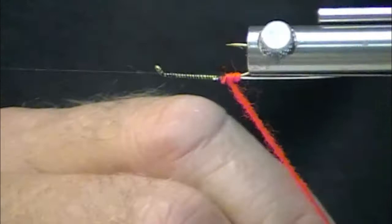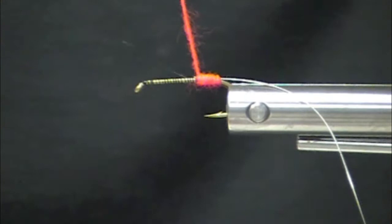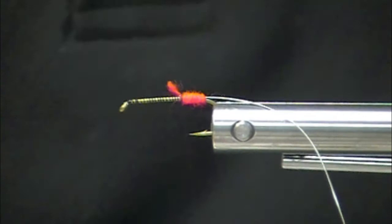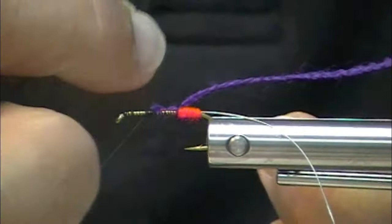If you wanted to, you could put on a peacock sword feather for a tail. I'm not a fan of tails so I omit that, but this Chinese red uni yarn is really nice. Where's my purple? Use purple. I could use an olive. I'm going to mix it up a little bit here.